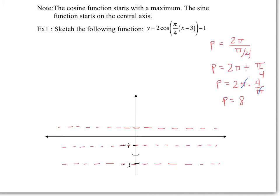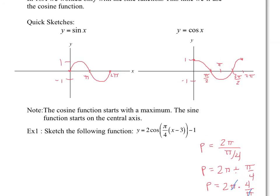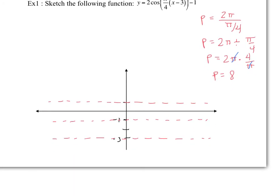The only thing left to do is find out where the graph is starting. Our cosine graph starts at the maximum, so I need to find where that maximum is going to be. Notice that we shifted 3 to the right, so I'm going to put the maximum 3 to the right. That's where your maximum is, the central axis is here, and the minimum is going to be over there. We have a period of 8.